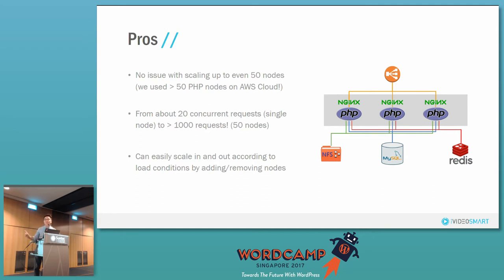We use AWS for this. We just start up an instance, add it into the load balancer as one of the round-robin nodes, and it just works without any issue. It's very easy. And whenever we find the load is not that high, we just take out nodes to save cost — when the traffic is not as heavy, we remove nodes. That is very easily done.